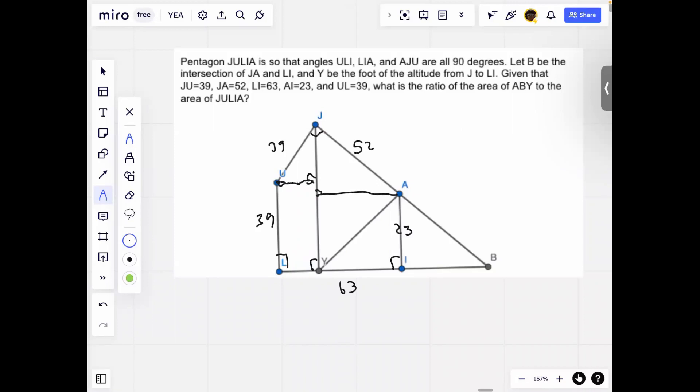Then we call the complement of yellow green. Since AJU is 90 degrees, then this is green. And since this triangle is a right triangle, then we also know that this angle is green.